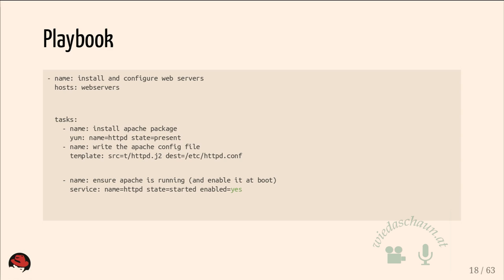By connecting tasks and associating them with a host where you want to run them, you create a playbook. A playbook has a name, specifies the hosts where you want the tasks to run — in this case a group of web servers defined in the static inventory — and lists the tasks: install HTTPD, create the configuration from a template, and start the service.